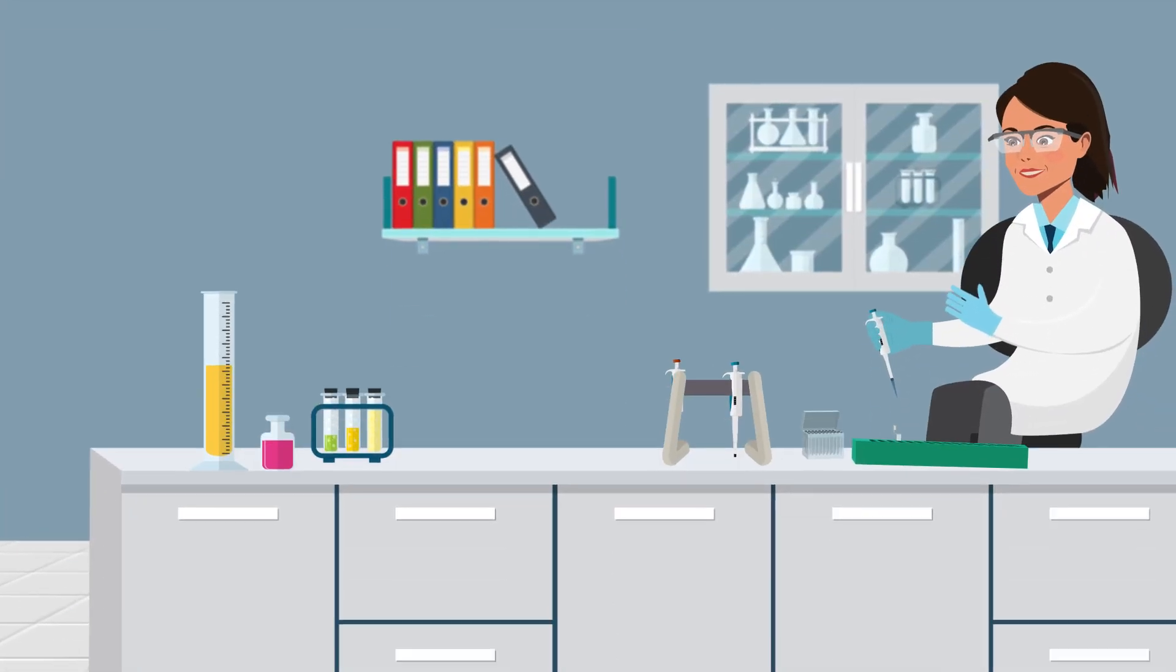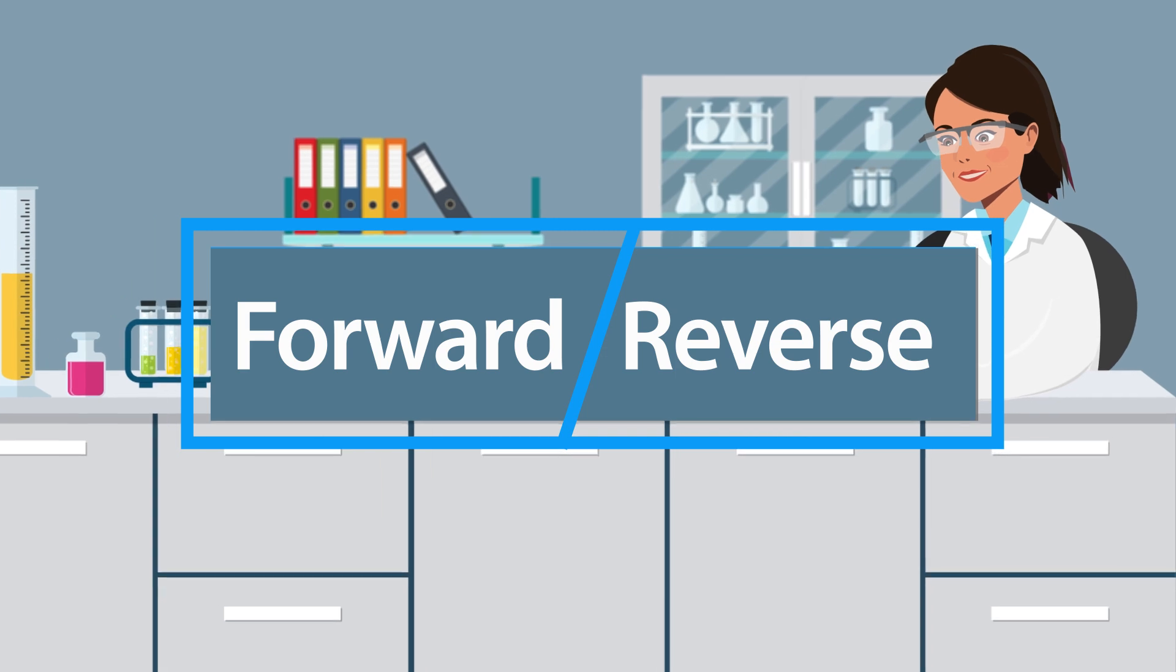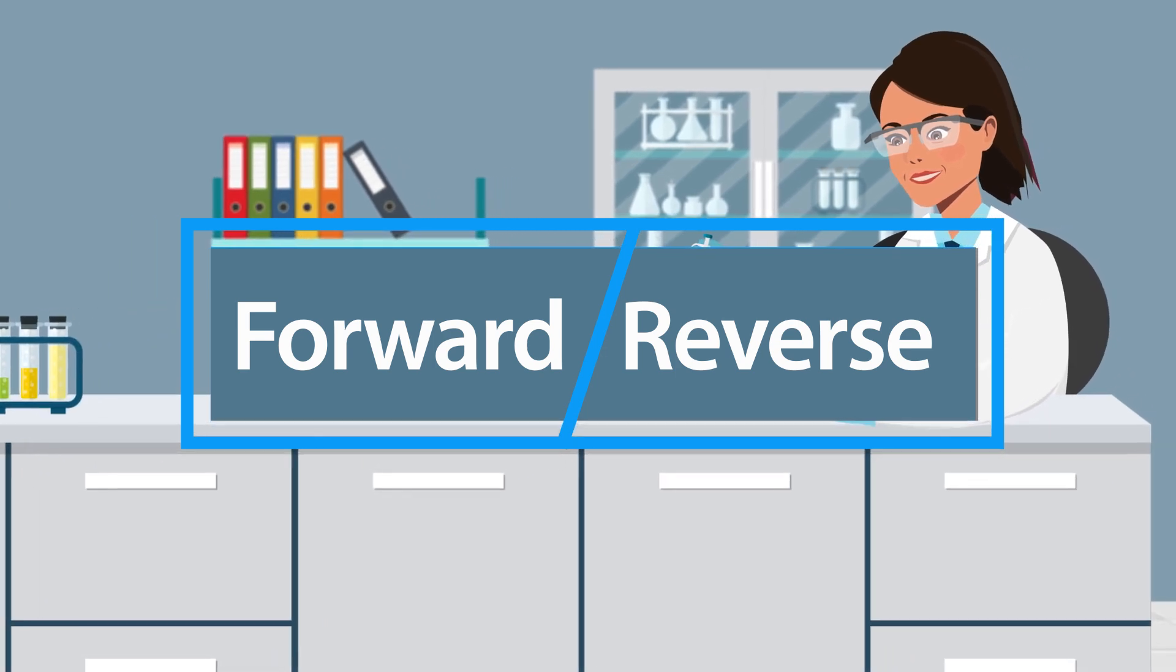There are two basic techniques for pipetting: forward and reverse pipetting. The two techniques differ in how the plunger is operated.